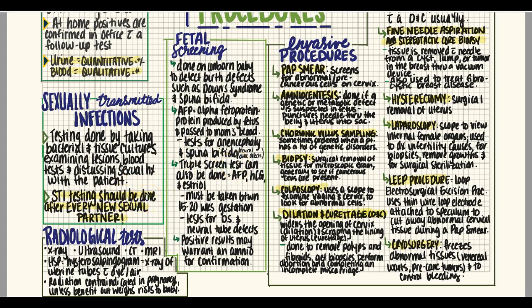Radiological tests include X-rays, ultrasounds, CT scans, and MRIs. A hysterosalpingogram (HSG) is an X-ray of the uterine tubes using dye or air to check for blockages that could prevent pregnancy by stopping the eggs from traveling from the ovaries through the uterine tubes into the uterus. A mammogram is an X-ray of the breast tissue.